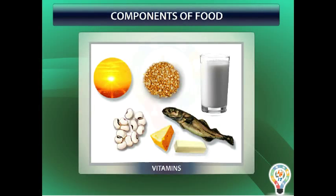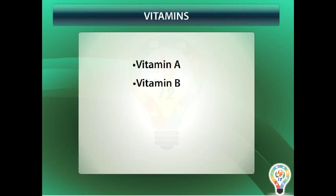Vitamins. Vitamins help in protecting our body against diseases. Vitamins also help in keeping our eyes, bones, teeth and gums healthy. Vitamins are of different kinds, known by different names. Some of these are Vitamins A, Vitamins B, Vitamins D, Vitamins E, and Vitamins K.